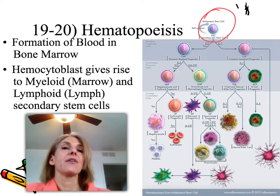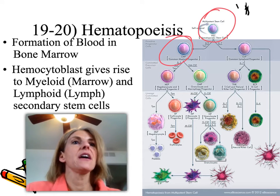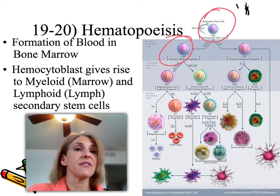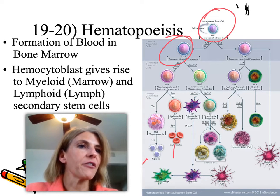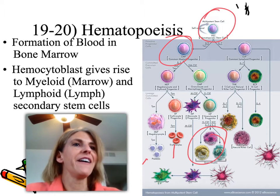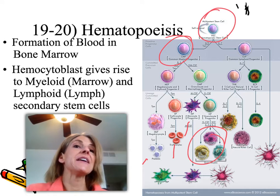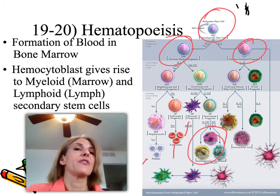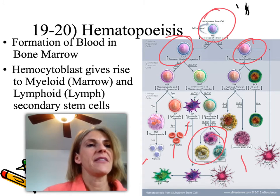The hematocytoblast may become a myeloid secondary stem cell, which stays in the bone marrow and differentiates into red blood cells, platelets, the different granulocytes, or a monocyte. Or it may become a lymphoid secondary stem cell, which differentiates in the lymph tissue. The first part of the word tells you where it's located. The lymphoid stem cell becomes lymphocytes: T cells, B cells, and natural killer cells.